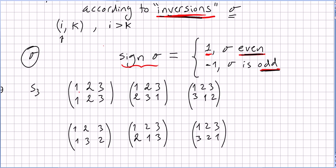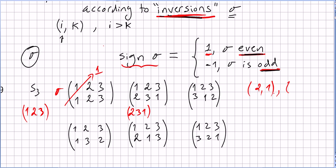Let us see in S3 the sign of each permutation. First, the identity written as one two three is even, so the sign of this permutation is one. What about the permutation one two three going to one three two... wait, let's take one two three going to two three one. The only smaller element to the right of two is one, and then three has one to its right — two inversions. An even number of inversions, so the sign of this permutation is one.